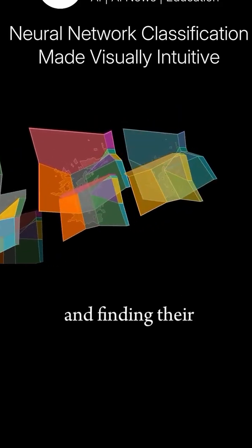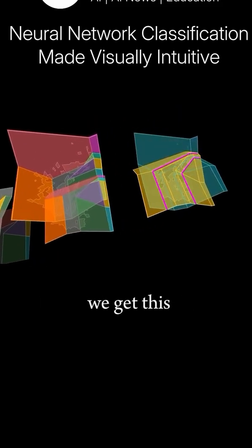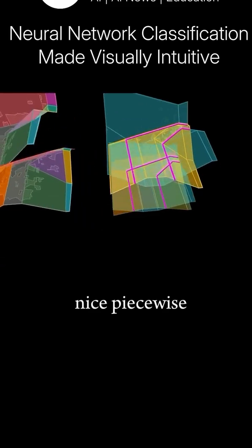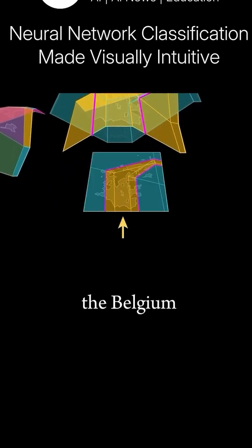Bringing these surfaces together and finding their intersection, we get this final decision boundary, which shows some nice piecewise linear curvature around the Belgian regions of our map.